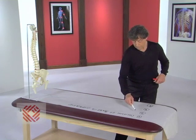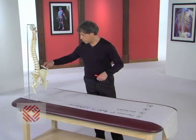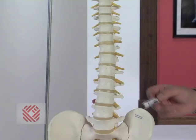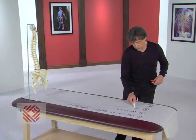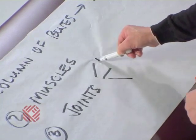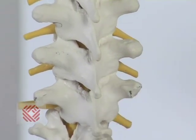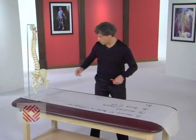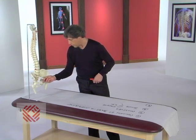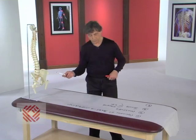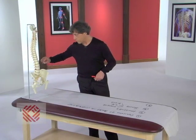Then we have the muscles that start on each side of this column and attach to the bone called the ilium. These help support this column. The third category is that of the joints, which are of three types: the facets, which are the joints that connect the vertebrae in the back; the sacroiliac joints — one on the left and one on the right — that anchor this column to the ilium bones on each side of your pelvis; and finally, the discs, which connect the vertebrae in the front.